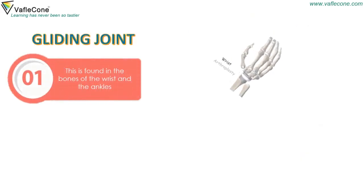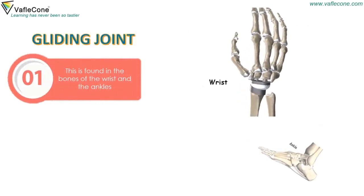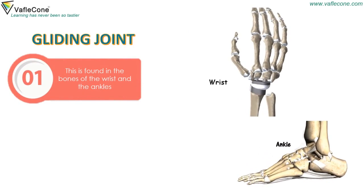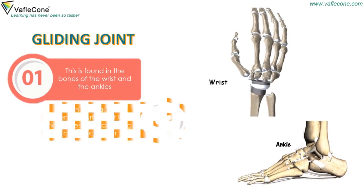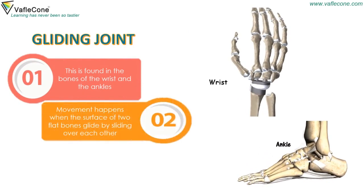Gliding Joint. This is found in the bones of the wrist and ankles. Movement happens when the surface of two flat bones glide by sliding over each other.